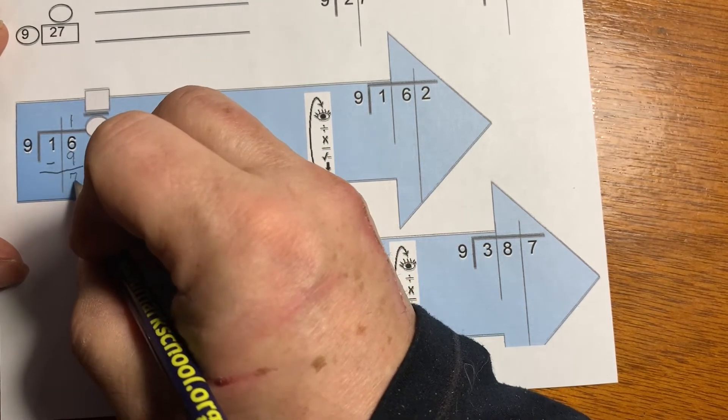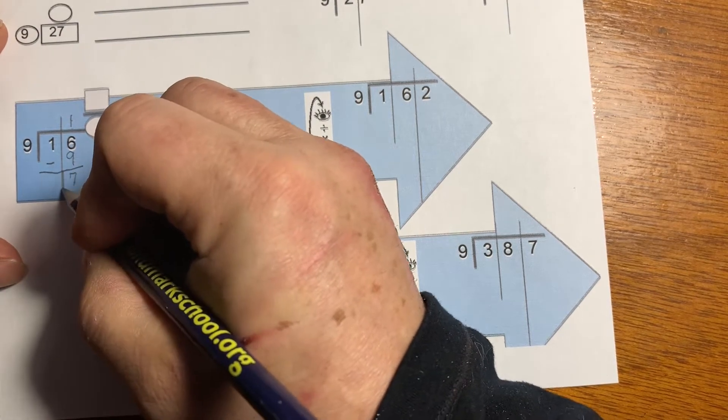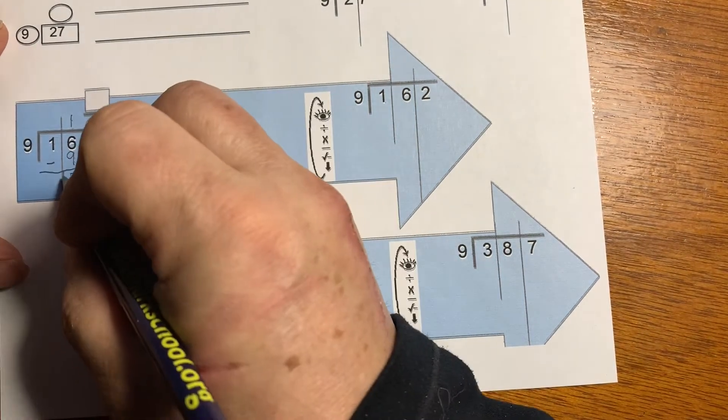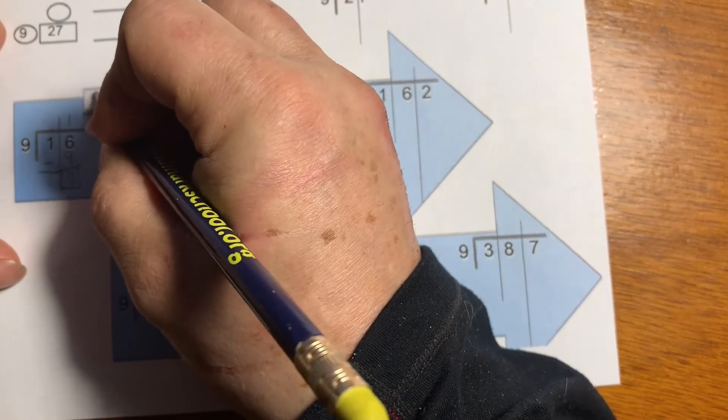Now I have 7 left. I can't make 9 out of it. It still has to be divided by 9, so I'm going to put a box around it, put it up here in the numerator of the fraction, and it still takes 9 to make a whole.